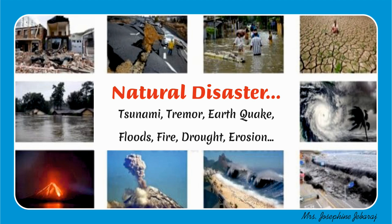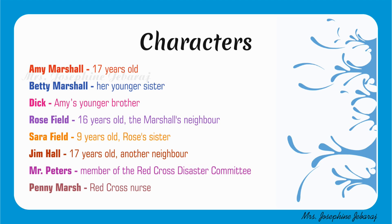Old Man River — it is a drama. First, let's see the characters. Emmy Marshall, a 17-year-old girl. Betty Marshall, Emmy's younger sister. Dick, Emmy's younger brother. Rosefield, a 16-year-old Marshall's neighbor. Sarahfield, Rose's sister, 9 years old. Jim Hall, 17 years old, another neighbor of Marshall. Mr. Peters, member of the Red Cross Disaster Committee. Penny Marsh, Red Cross nurse.